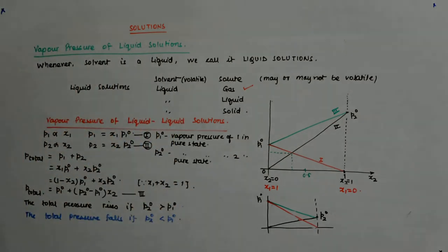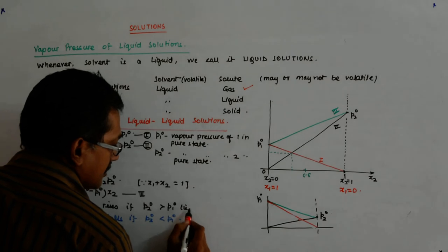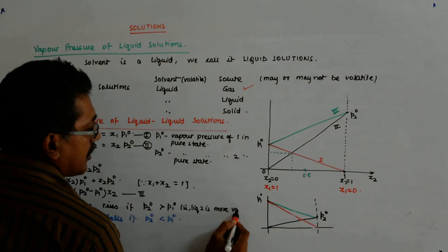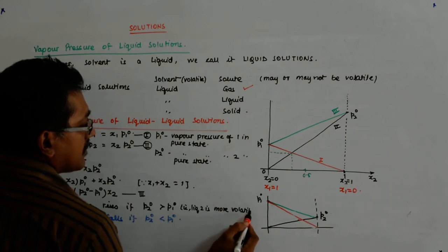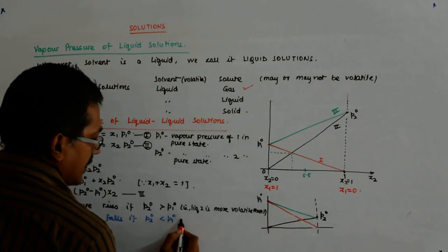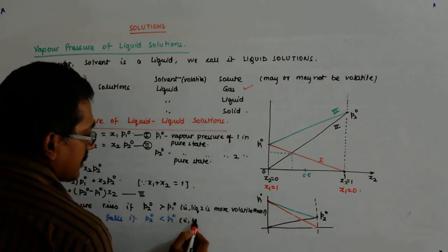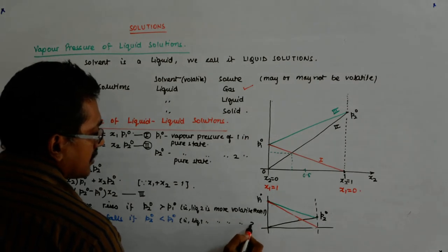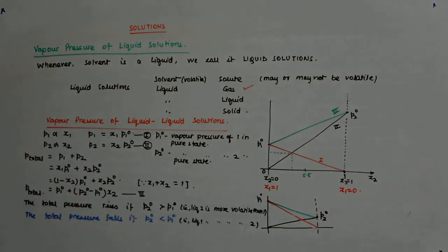You can draw so many conclusions from one graph. So, if P2O, that is, liquid two is more volatile than one. And here, that is, liquid one is more volatile than two. Is it not? As simple as that.